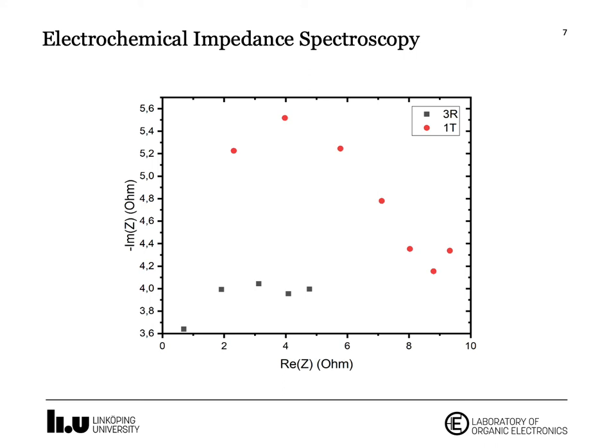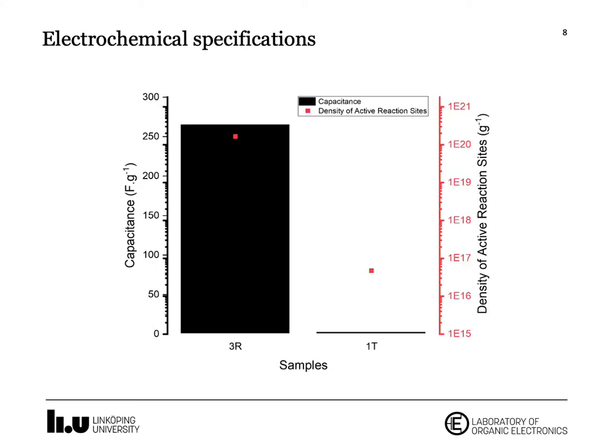The other electrochemical specifications like capacitance for the 3R is almost 250 times higher compared to the 1T, and the density of reaction sites for the 3R is almost 10,000 times higher than that of 1T.